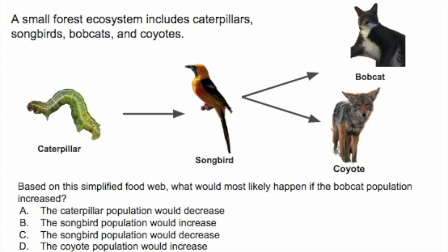What about B — the songbird population would increase? If the bobcats eat the songbirds and we're increasing the number of bobcats, logically more songbirds will be eaten by the bobcats. So B is not correct because we would expect the songbird population to decrease, which is why C is the correct answer.